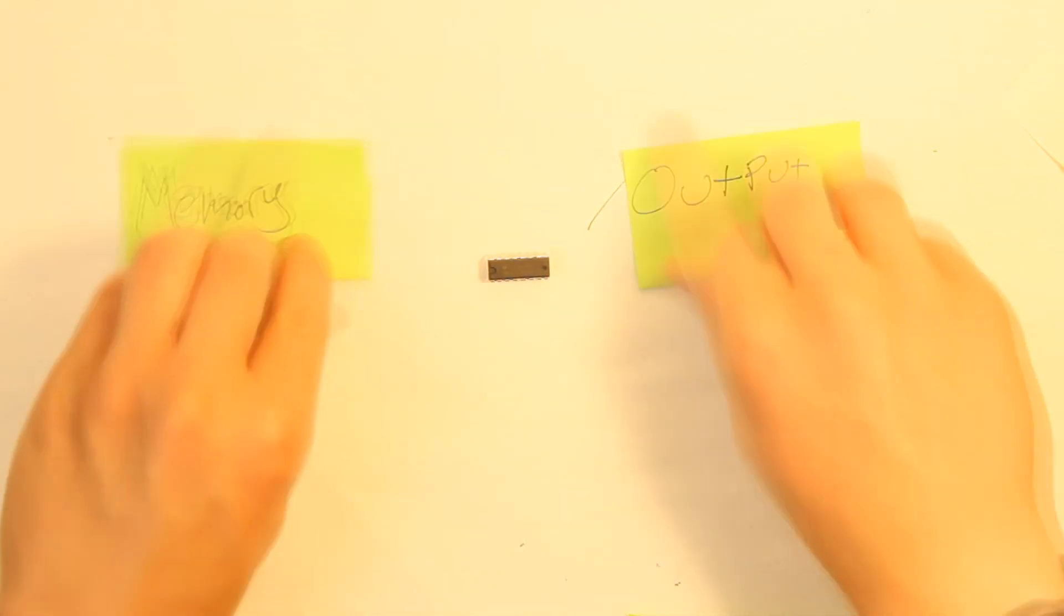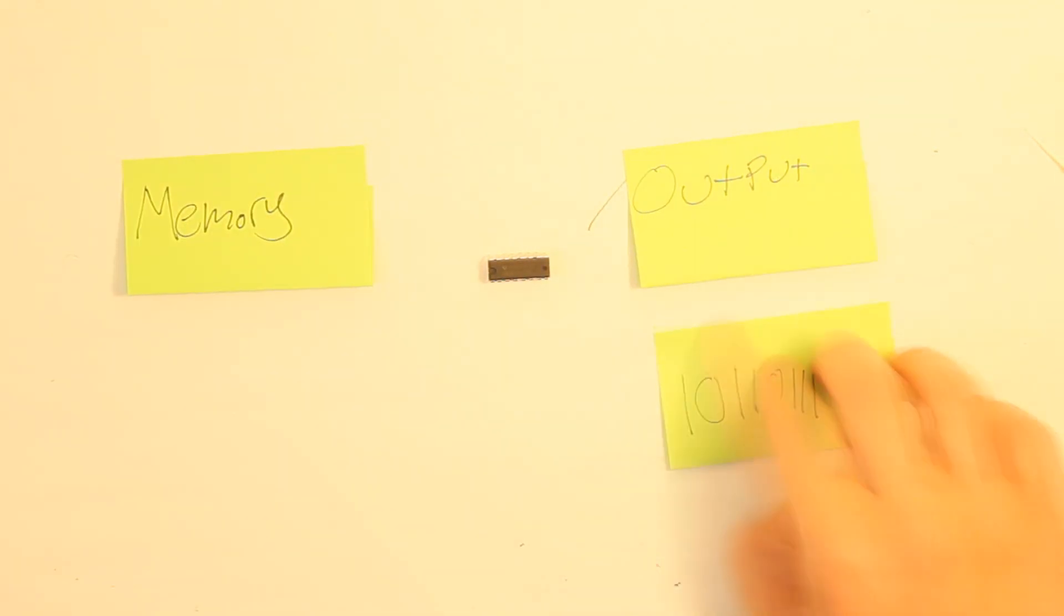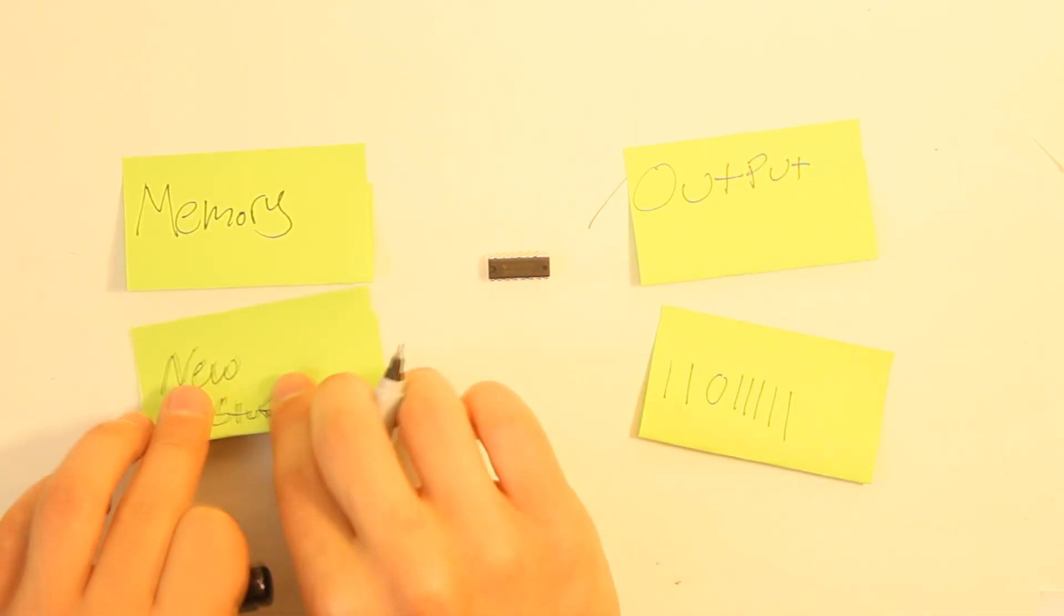You can write to the memory in a shift register without changing what is on the output, and replace the contents of the output with what is in the memory at any time.